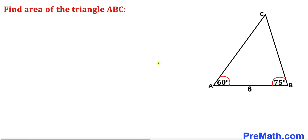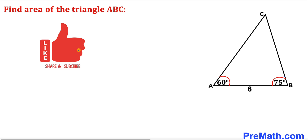Welcome to pre-math. In this video we have got triangle ABC such that angle A is 60 degrees, angle B is 75 degrees, and side length AB is 6 units. We are going to calculate the area of this triangle ABC. Please don't forget to give a thumbs up and subscribe.